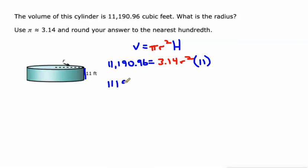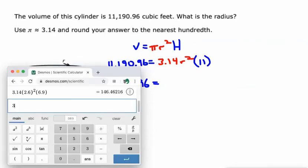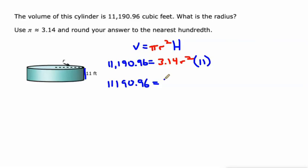So on this one, let's simplify the right side a little bit. Let's do 3.14 times 11, which is 34.54 r squared. Then we'll divide both sides by 34.54 to get the r squared by itself.